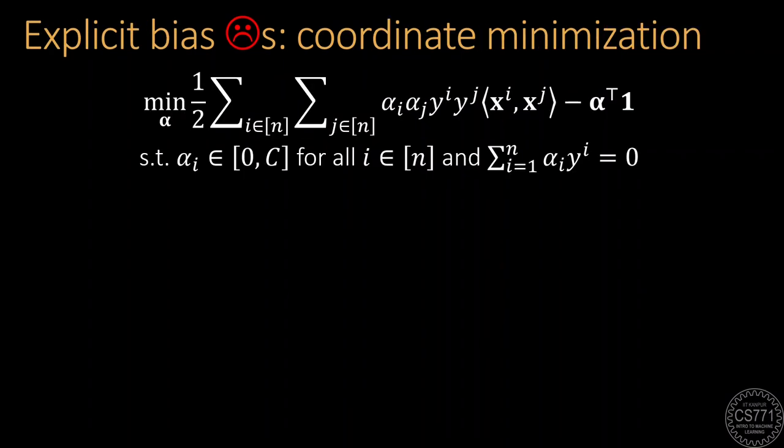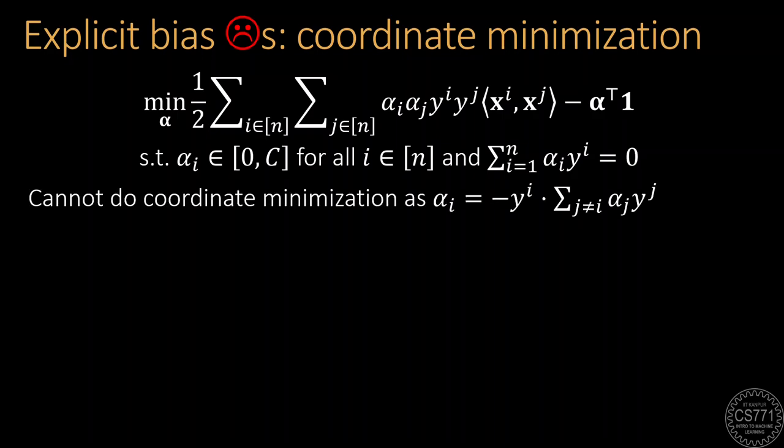The first challenge with the explicit bias formulation is that it does not allow coordinate minimization since the additional constraint summation alpha_i times y_i equals 0 links all the dual variables together.